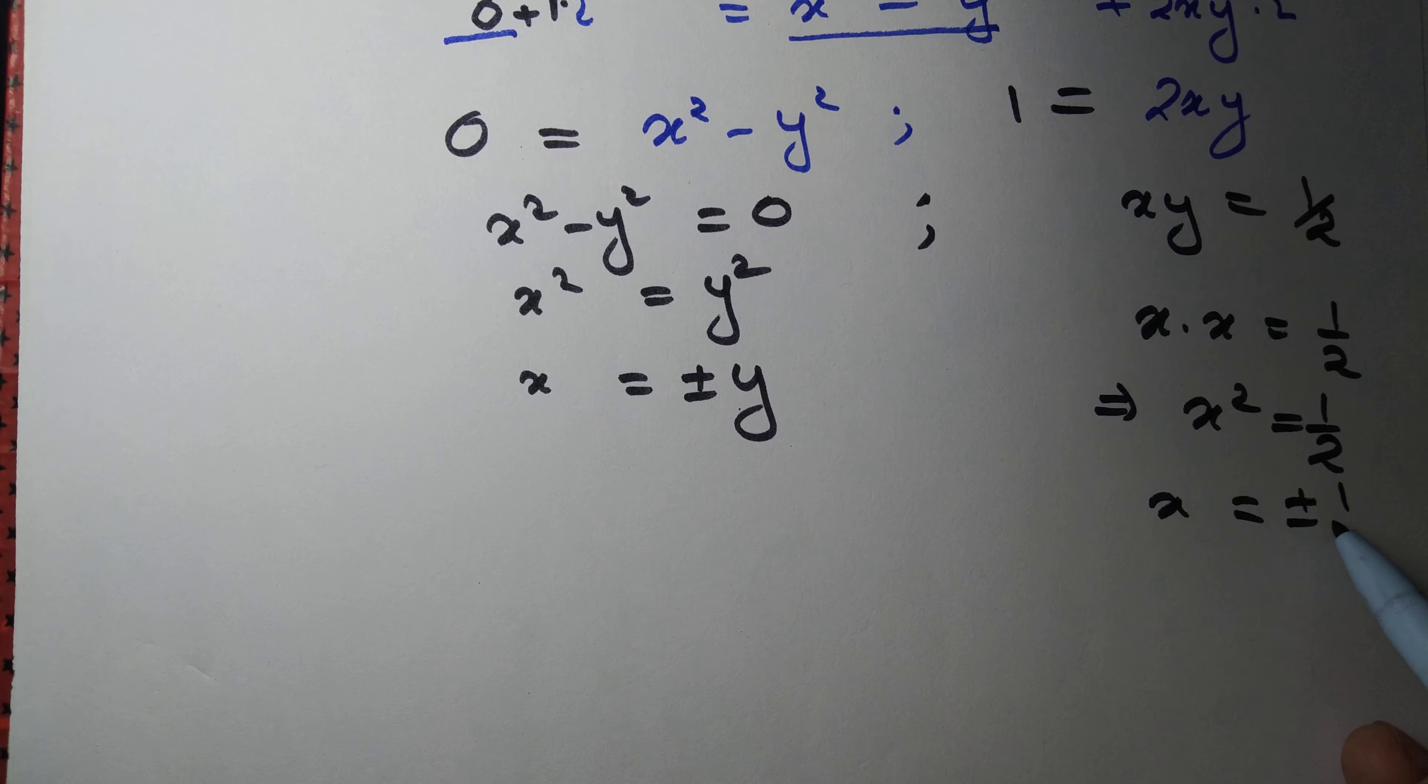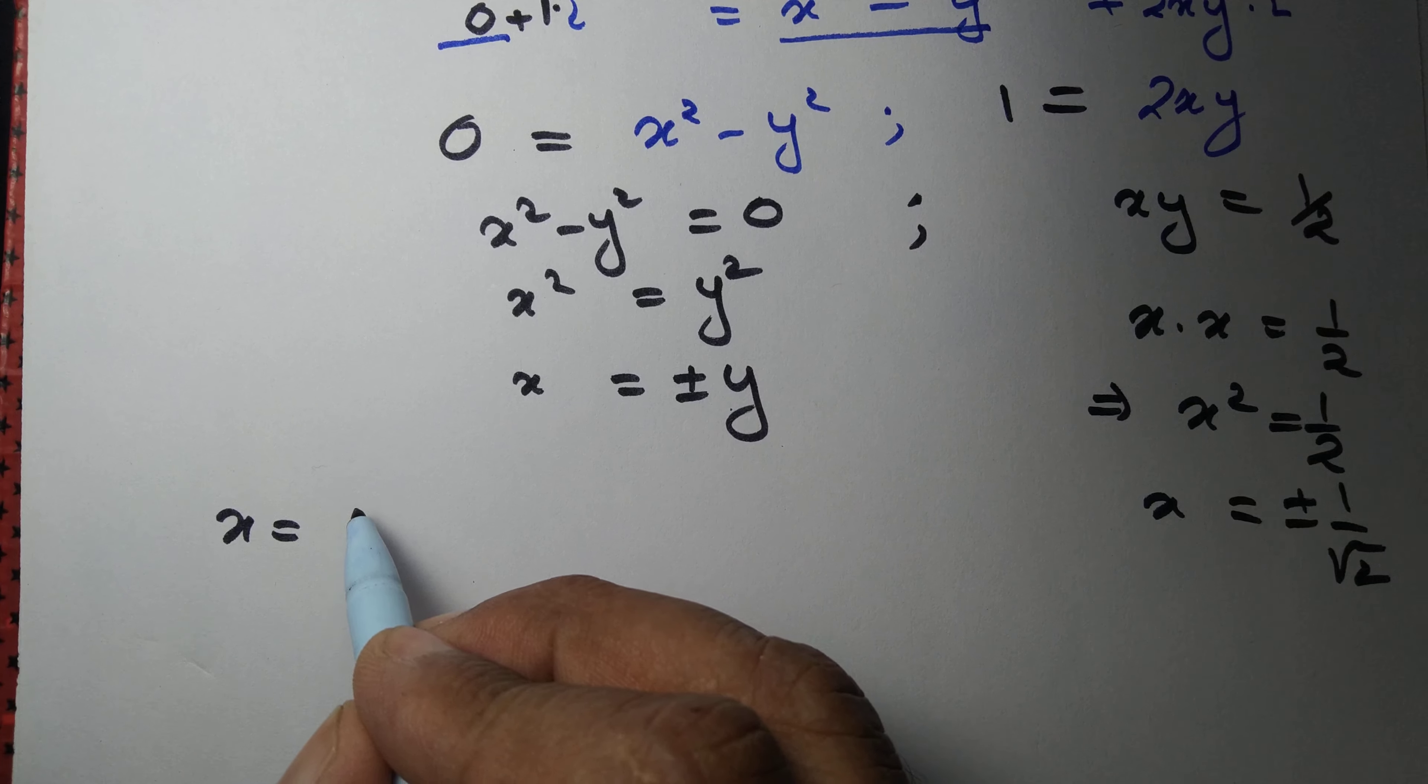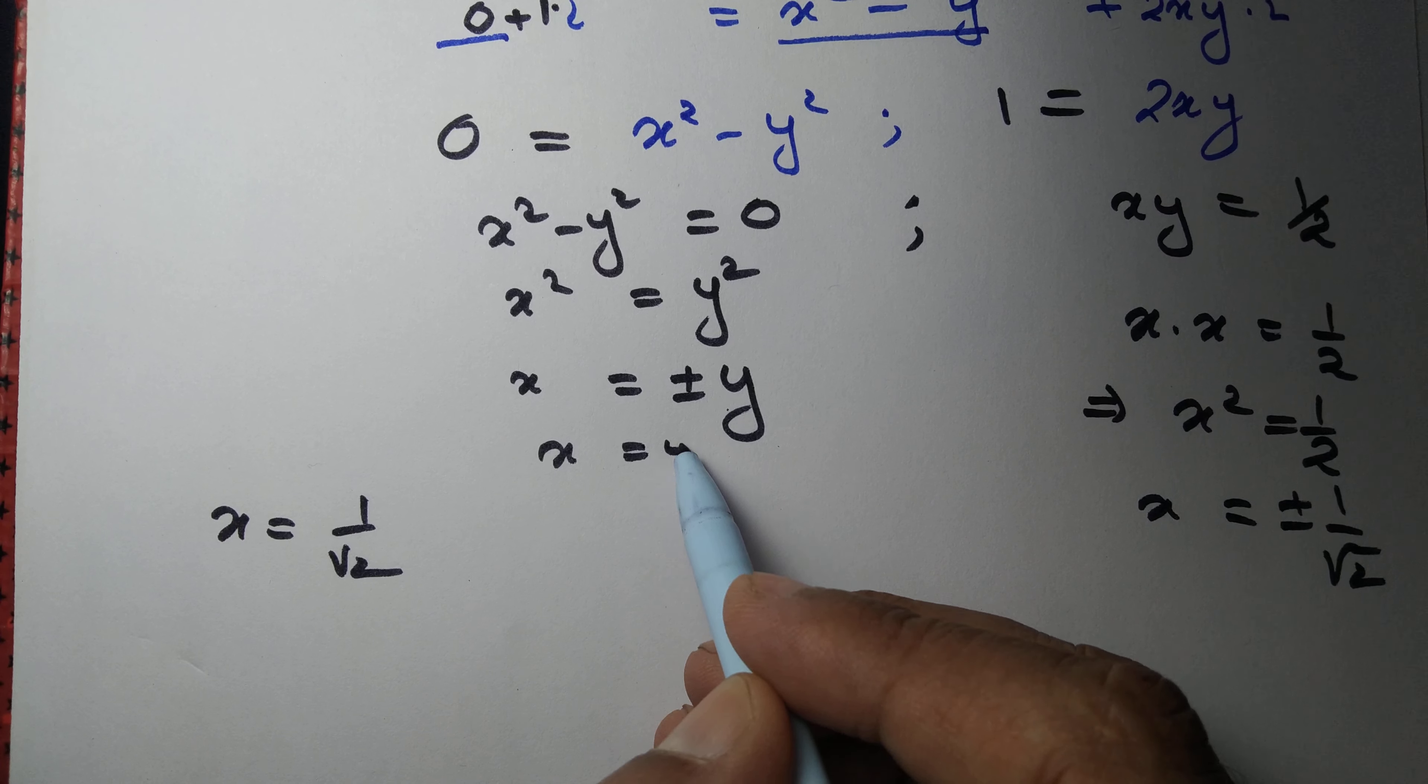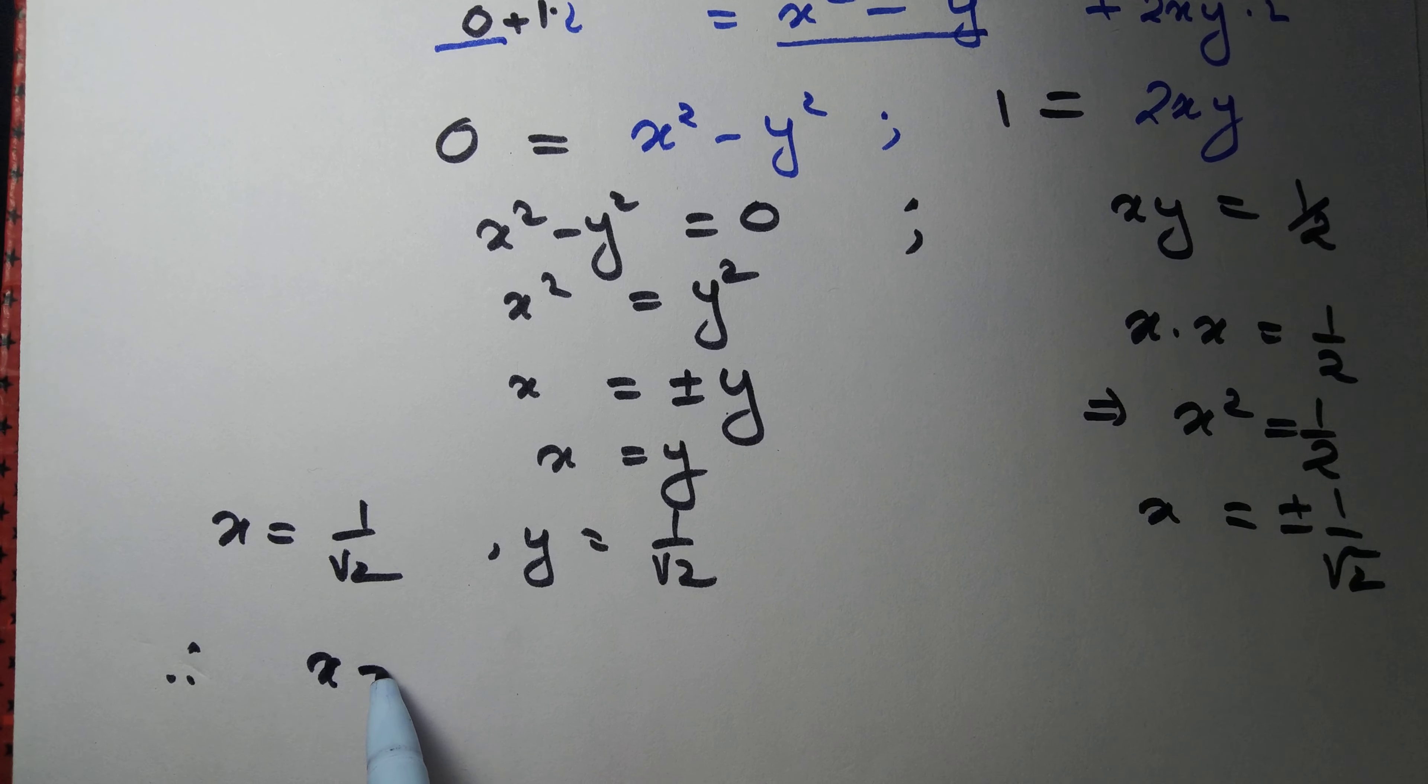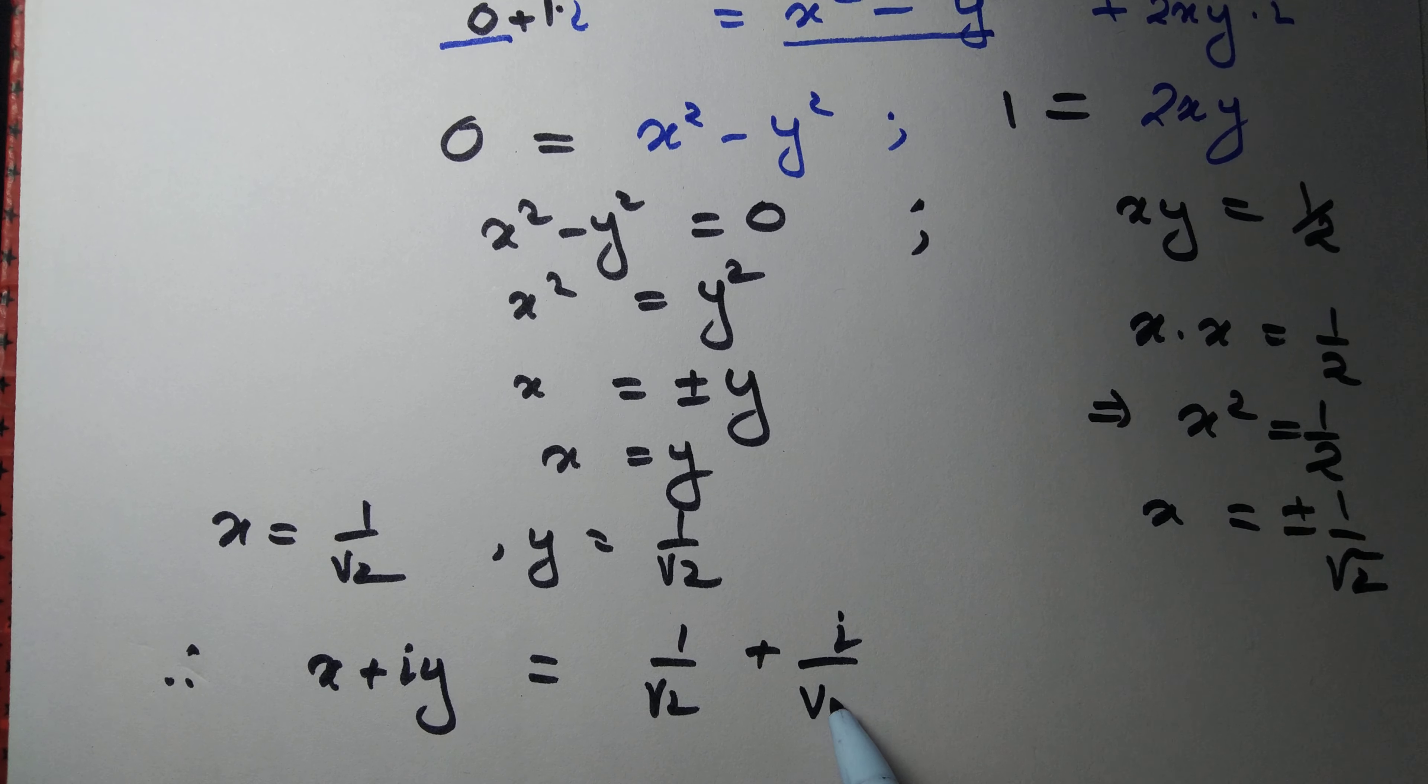When you take x equals plus 1 by root 2, you have x equals y, because x and y both have to be either positive or negative. So y is also equal to 1 by root 2. Therefore, x plus iy equals 1 by root 2 plus i by root 2.